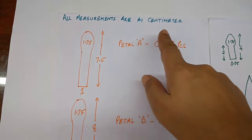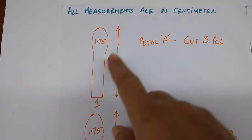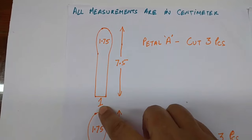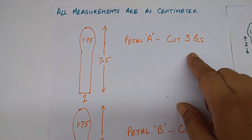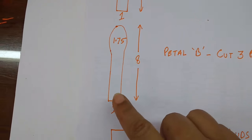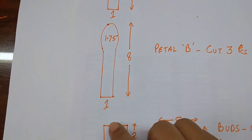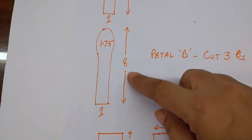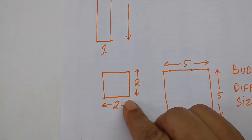All the measurements are given in centimeters. This is the stencil of petal A. This is 1.75 wide here and 1 cm wide at the base and it is 7.5 cm high. Cut 3 pieces per flower. This is petal B. Again this is 1.75 wide here and 1 cm here and this is 8 cm tall, so cut 3 pieces of this.